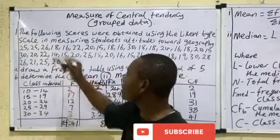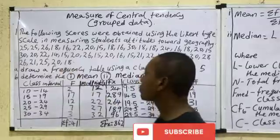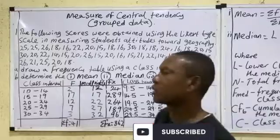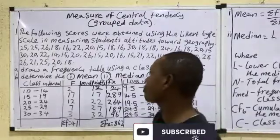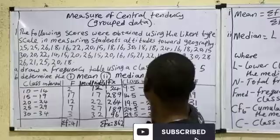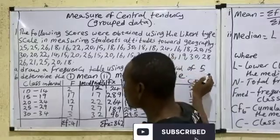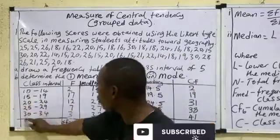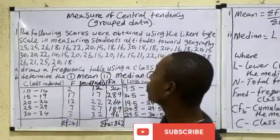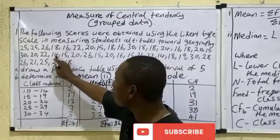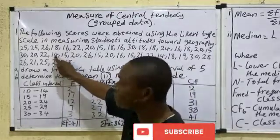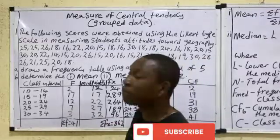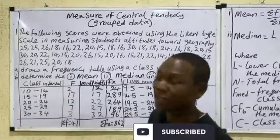Since the lowest is 14, we will start from a value of 14 or below. Another rule: the lower class limit must be a multiple of 5, the class width. So we must choose a starting point that accommodates the smallest value and is a multiple of the class interval.